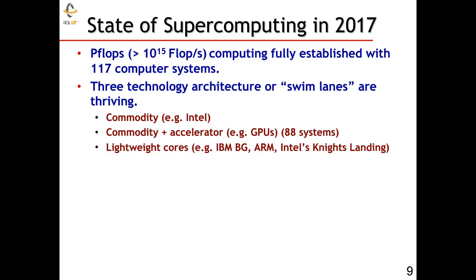We see that emerging through the ARM processor — the processor used in our cell phones — and also with other commodity processors from Intel with its Knight's Landing processor and IBM through its BlueGene line of machines.